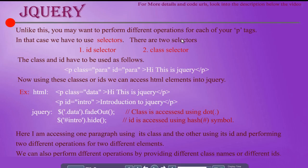There are two types of selectors: the id selector and the class selector. We have to use them like this — I have written p class equal to 'para', id equal to 'para', with some data inside and the p tag closed. We have to assign a particular name for class and a particular name for id. Using these class names and id names, we will access the HTML elements in jQuery.